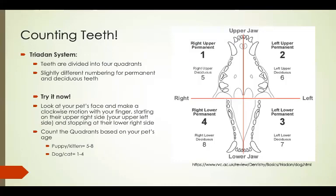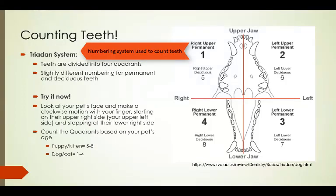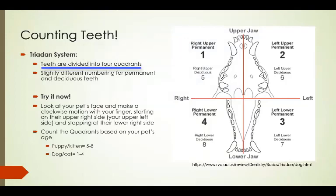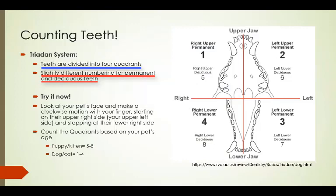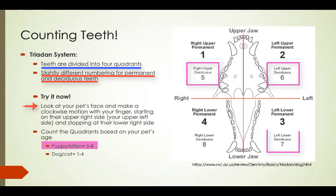We're now going to learn how to count teeth. The Triadan system is the numbering system veterinarians use to count teeth. Teeth are divided into four quadrants, from upper right to lower right, and are numbered one through four for permanent teeth, and five through eight for deciduous teeth. You can try this now — look at your pet's face and make a clockwise motion with your finger starting from the upper right side of their mouth and stopping at the lower right side. If you have a puppy or a kitten, count five, six, seven, and eight.